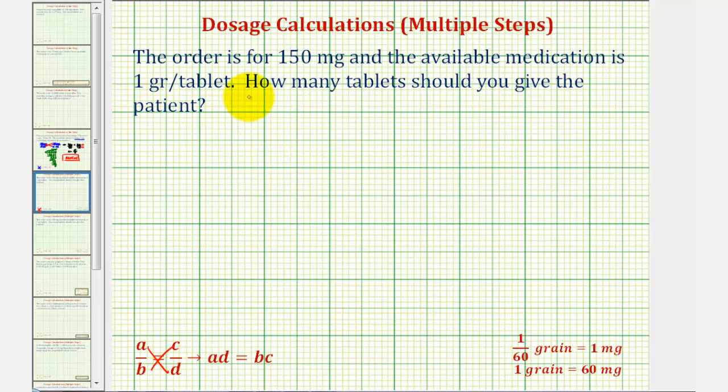Looking at the given information, notice how the available information is one grain per tablet, which will be our first rate.